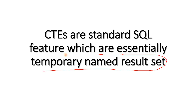CTEs are standard SQL features which are essentially temporary named result sets. Suppose you have a small select query and that select query returns a result set — for that result set you are giving a temporary name, and that name you are referring to in the future in some other select query, as if the result set is acting like a data source. That is the behavior of CTE. When we apply this in a real concept, this definition will be much clearer.